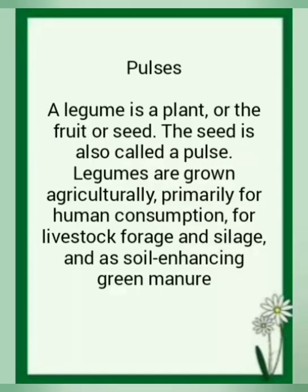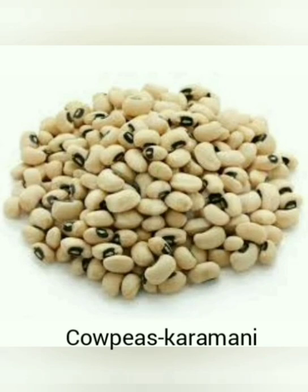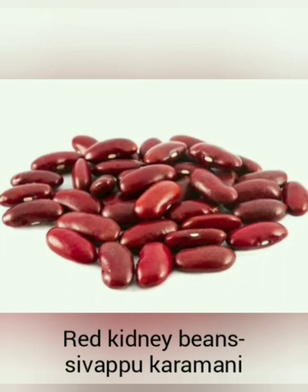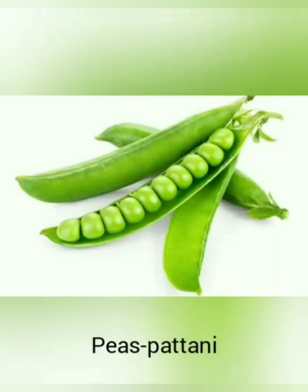A legume is a plant, or the fruit or seed of a plant. The seed is also called a pulse. Legumes are grown agriculturally primarily for human consumption. Examples of pulses include cow peas (karamani), red kidney beans (sivappu karamani), double beans, irati beans, and peas (patani).